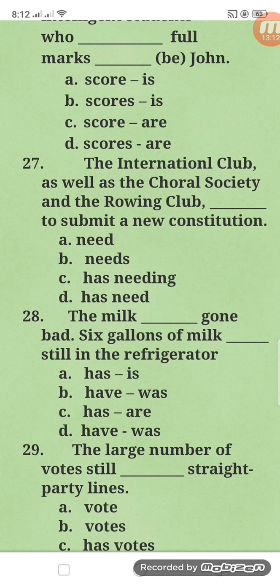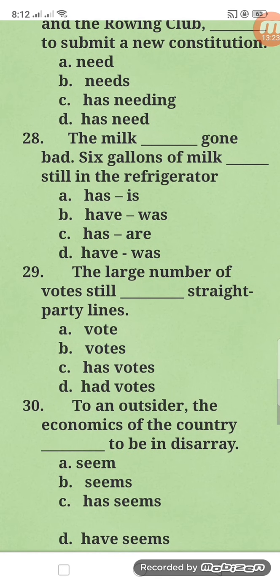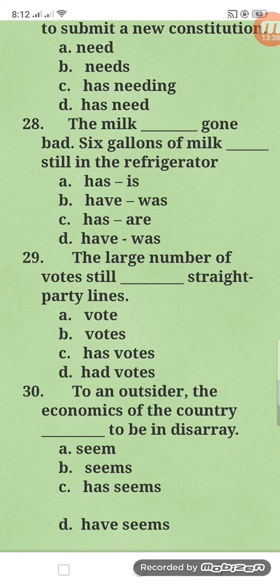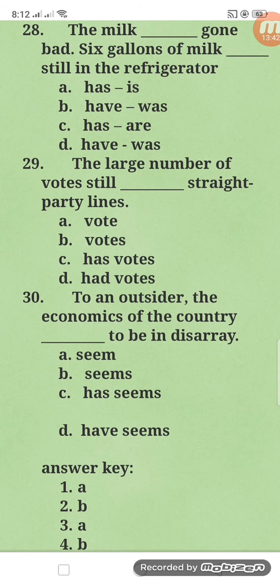Number twenty-seven: the International Club as well as Choral Society and the Rowing Club — intervening phrases. 'International Club' is singular, so it takes singular verb: needs to submit a new constitution. Number twenty-eight: six gallons of milk — has gone bad versus are still in the refrigerator — letter C. Number twenty-nine: the large number of votes — 'the number' always takes singular verb, while 'a number' always takes plural verb.